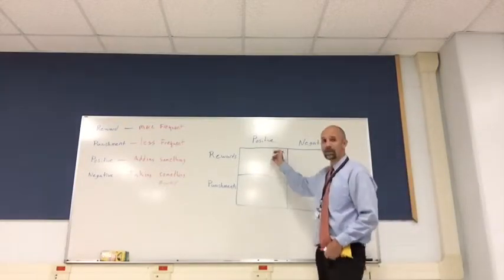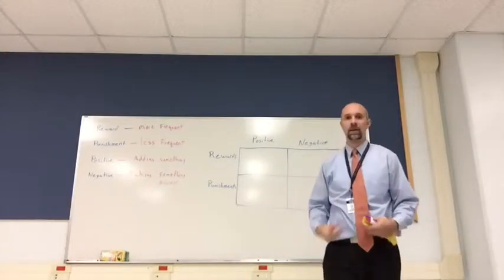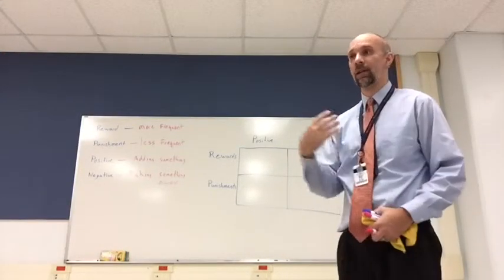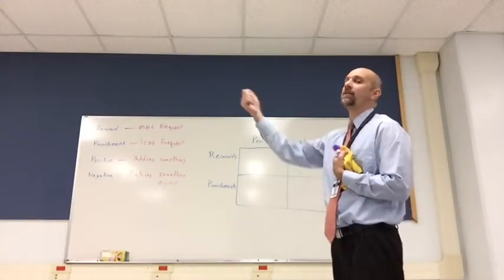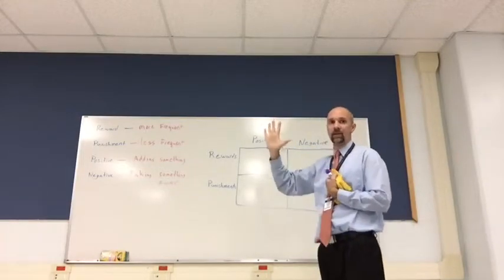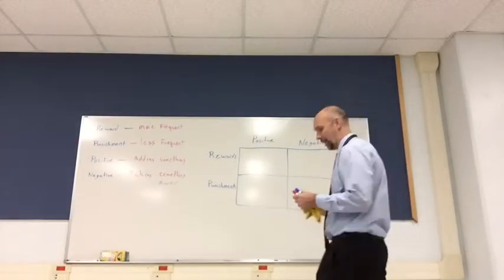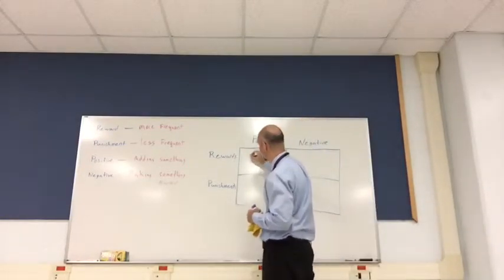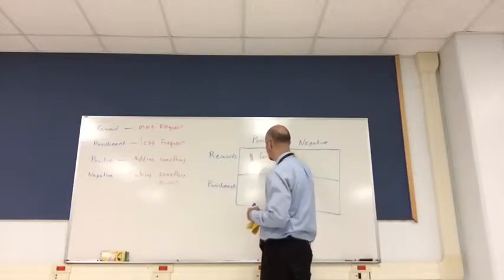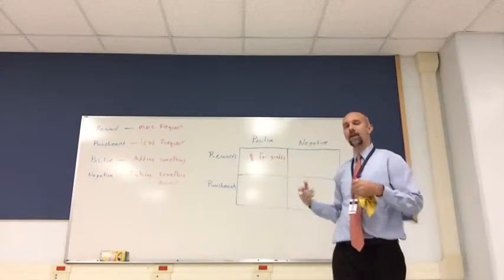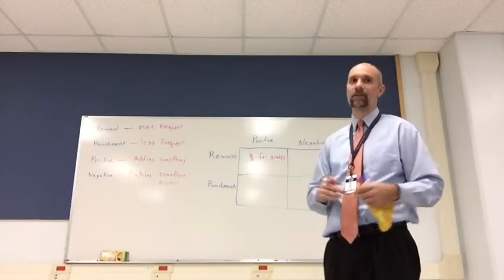Positive rewards means we're adding something to make a behavior occur more frequently. This is pretty easy. Imagine if we tell kids we're going to give you five dollars for every time you get an A on a quiz. People like getting five dollars. We're adding five dollars, and if it makes the getting an A on a quiz occur more frequently, then it has worked as a positive reward.